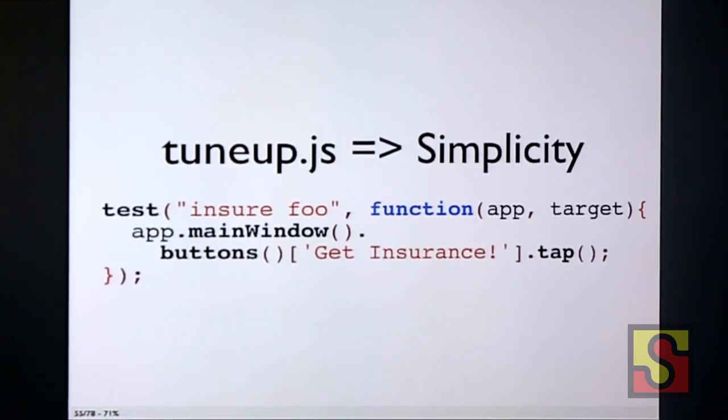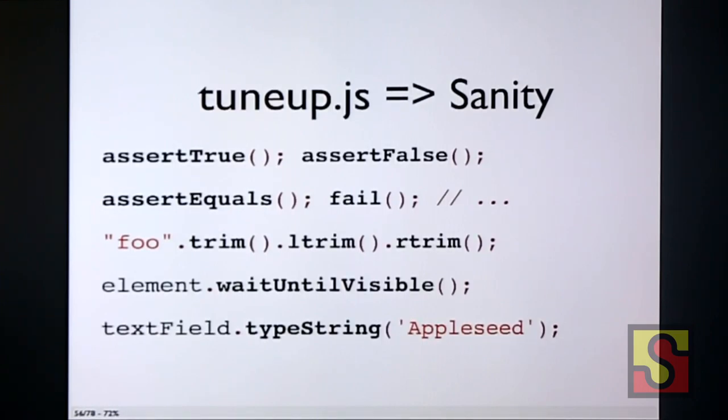So, if you use TuneUp.js, your tests look like this, which is a huge improvement. We're not actually doing any assertions in here, but we are testing for errors. So, for example, if getting the get insurance button returns nil, we're going to call tap on nil, and it'll throw an error, so we'll see that as a failure. There are many other things that TuneUp gives you, things like assert true, assert false, assert equals. You can unequivocally fail. You can do some string manipulations, like trimming. You can wait until something is visible. These are things that UI automation does not give you out of the box. You can type a string using the keyboard. So, that's an overview of TuneUp.